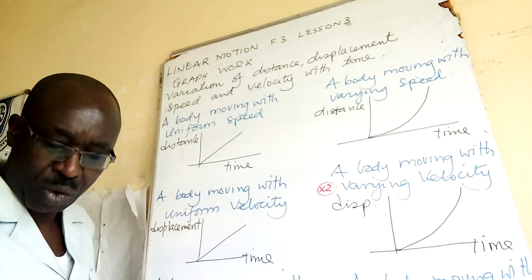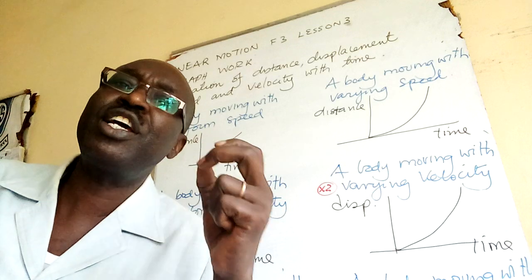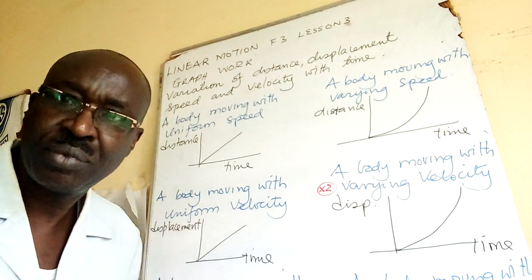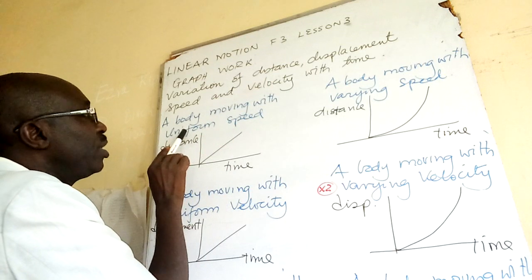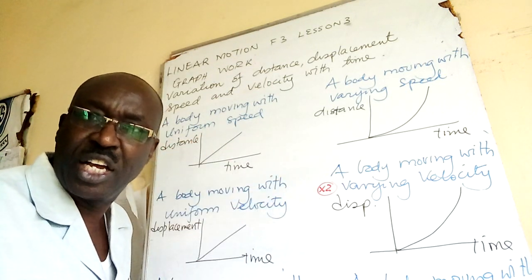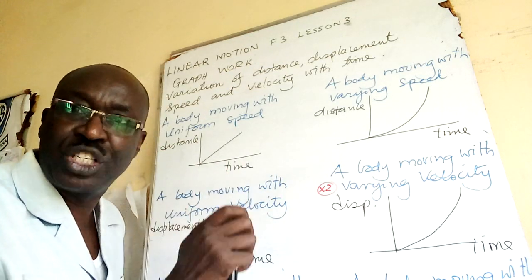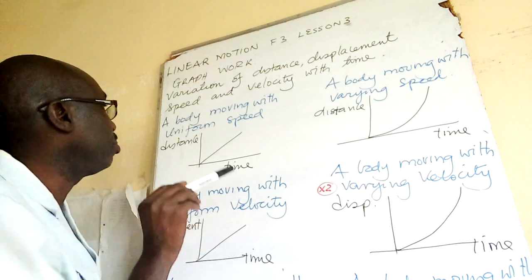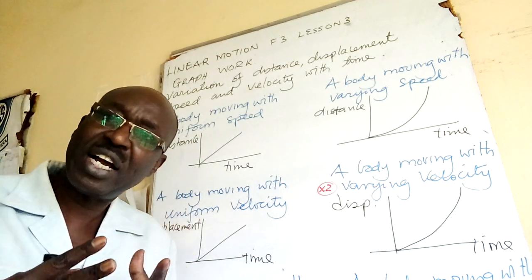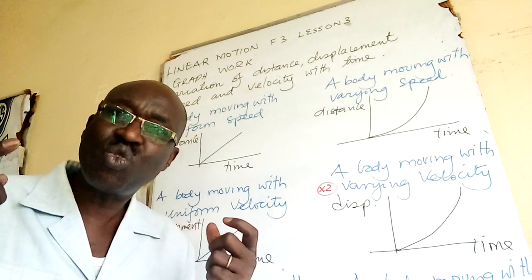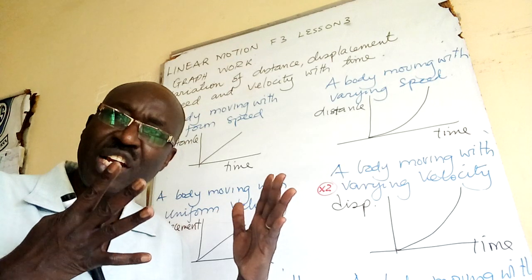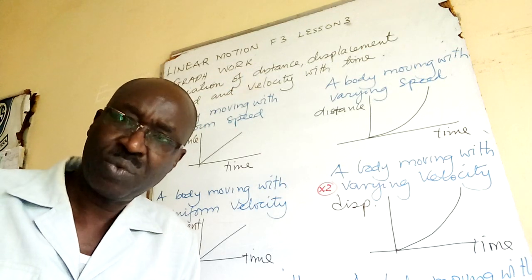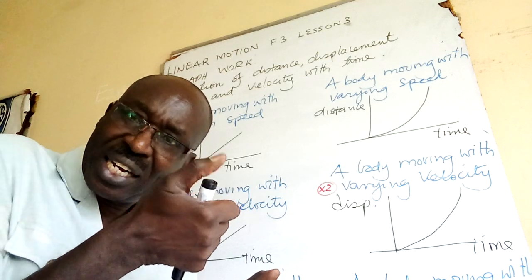Consider a body moving with uniform speed. The definition of speed helps you — speed is distance over time. So when we talk of a body moving with uniform speed, break that speed into distance and time, which gives you a graph of distance against time. The graph is linear because we've said uniform speed — whenever it is uniform, the change in one quantity happens within equal time intervals.